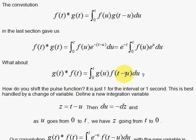We're going to say, let's let t minus u equals z. Then du is equal to minus dz.